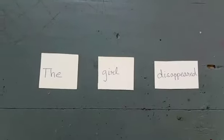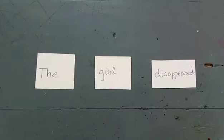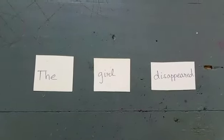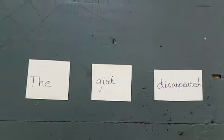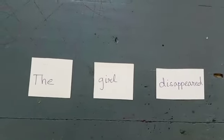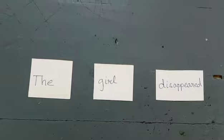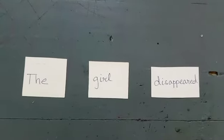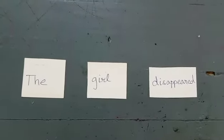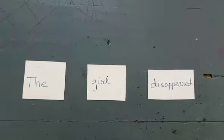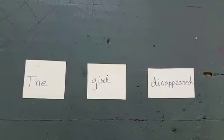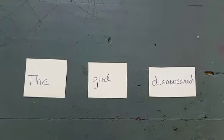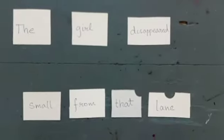I have prepared three flashcards. On the flashcards it's written: 'The girl disappeared.' Here 'the girl' is the subject and 'disappeared' is the predicate. Now we are going to expand this sentence with the subject and predicate.